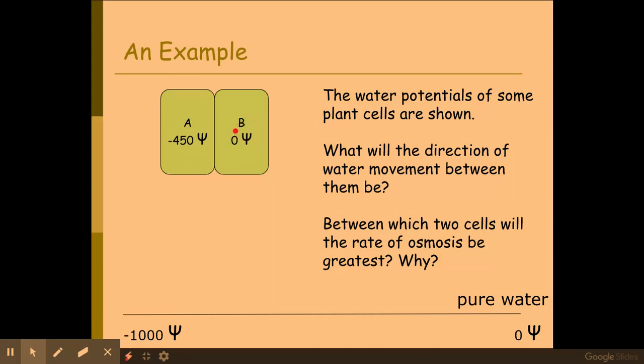So it's really important as well, you're using comparable terminology here, so you're saying higher or lower than, otherwise you don't get the marks. So here, what we need to say to get the marks is that cell B has a higher water potential than cell A. Therefore, water will move from cell B into cell A down the water potential gradient by osmosis.